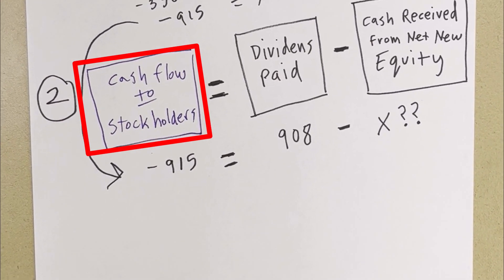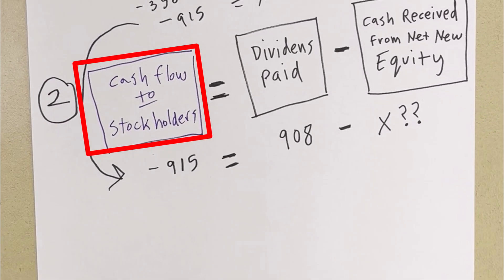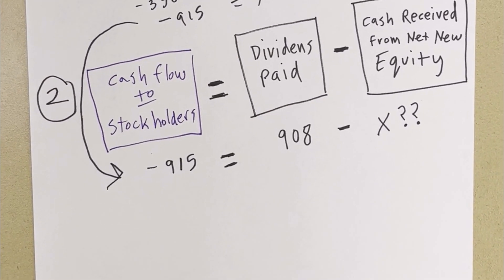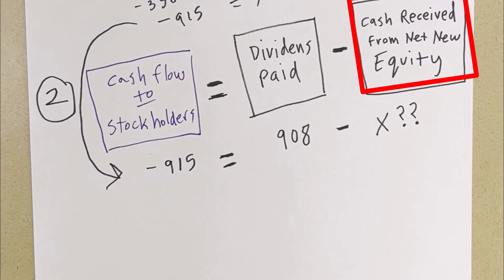Now, this equation, cash flow to stockholders. Well, what do stockholders get? Dividends, so equals dividends paid minus any cash they gave us, cash received from net new equity.